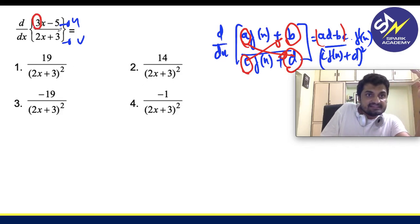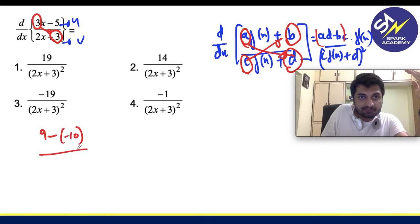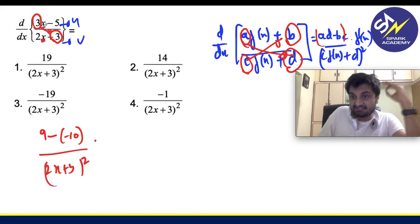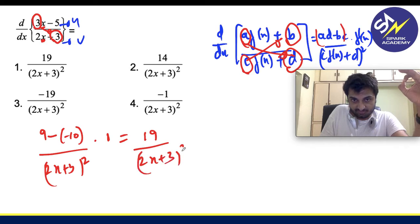This is simply I can write it as 3 into 3 is 9, minus, minus 5 into 2 will be minus 10, whole divided by (2x + 3) whole square. What is the function here? The function is x, derivative of x is 1. 9 plus or minus 10 is 19 by (2x + 3) whole square.